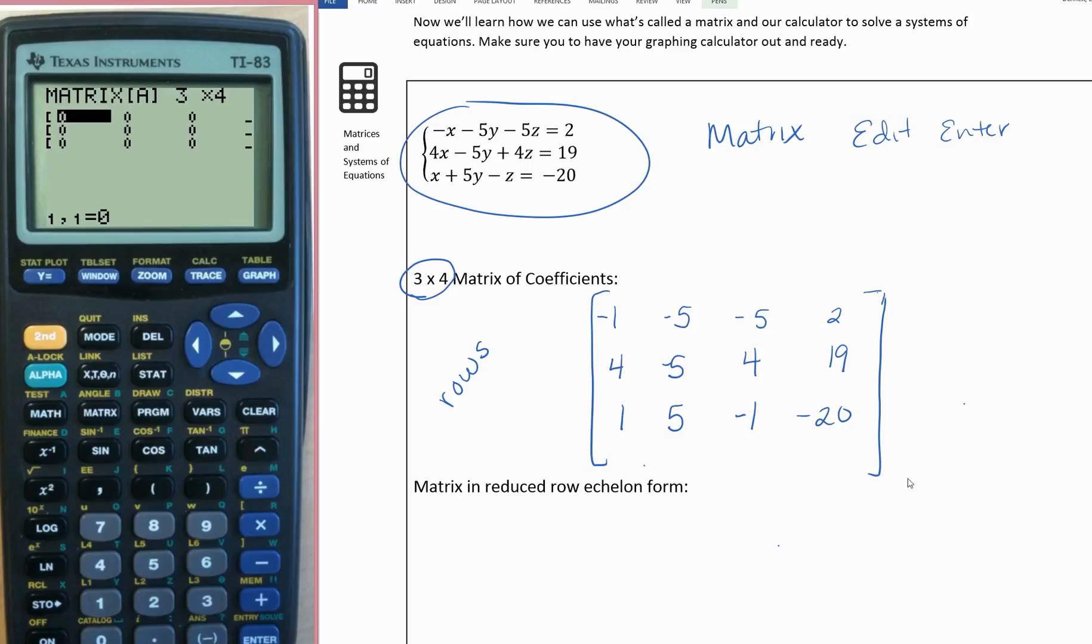Now we're going to input what we just wrote. Hit enter after each one: negative 1, negative 5, negative 5, 2, 4, negative 5,